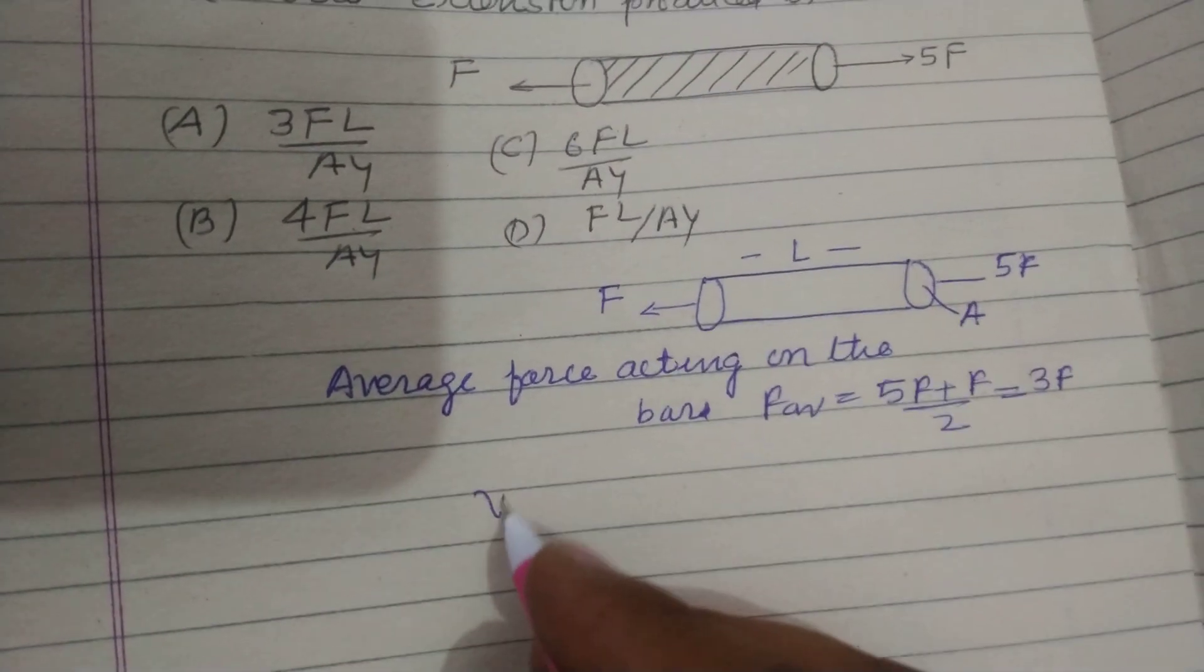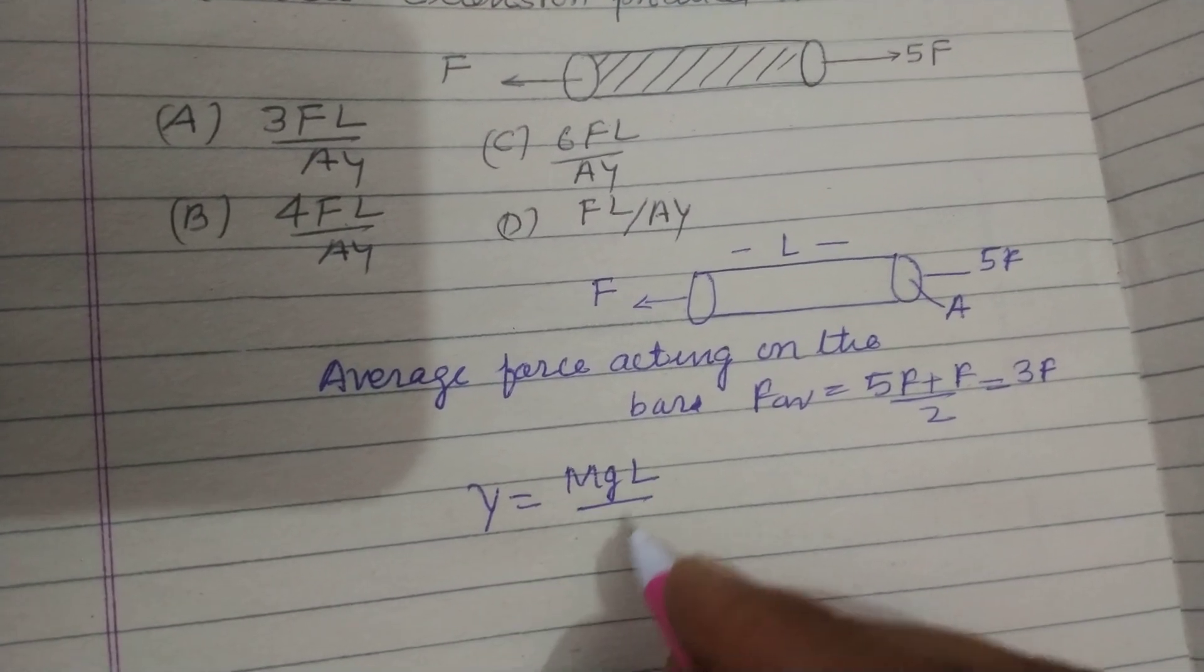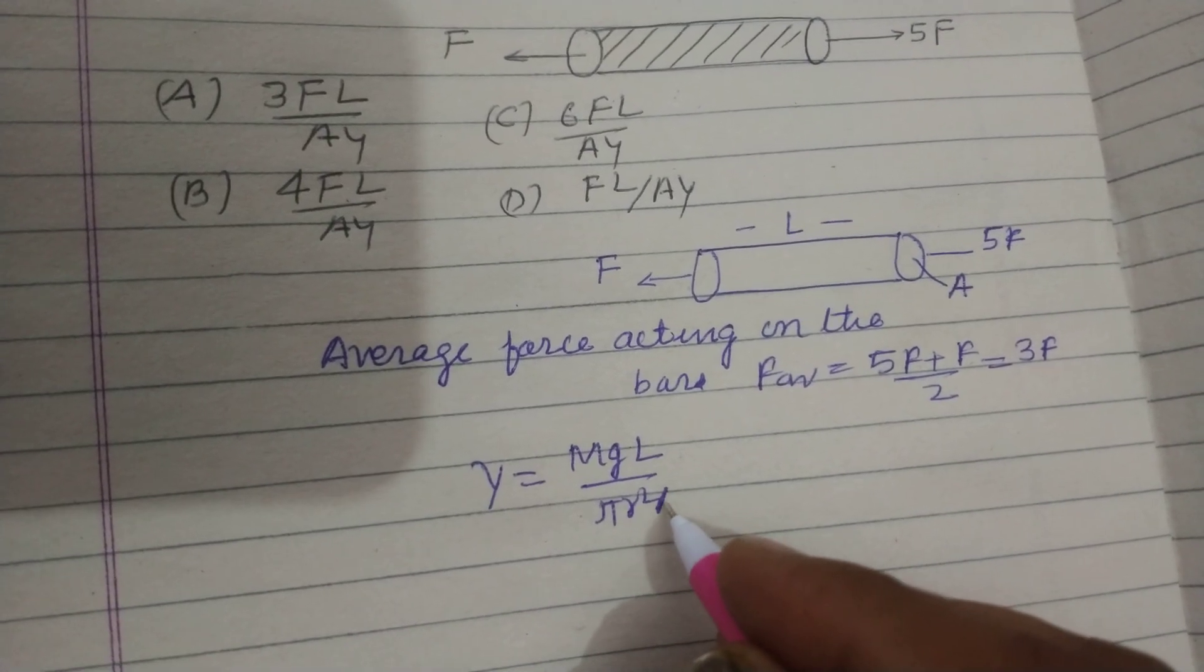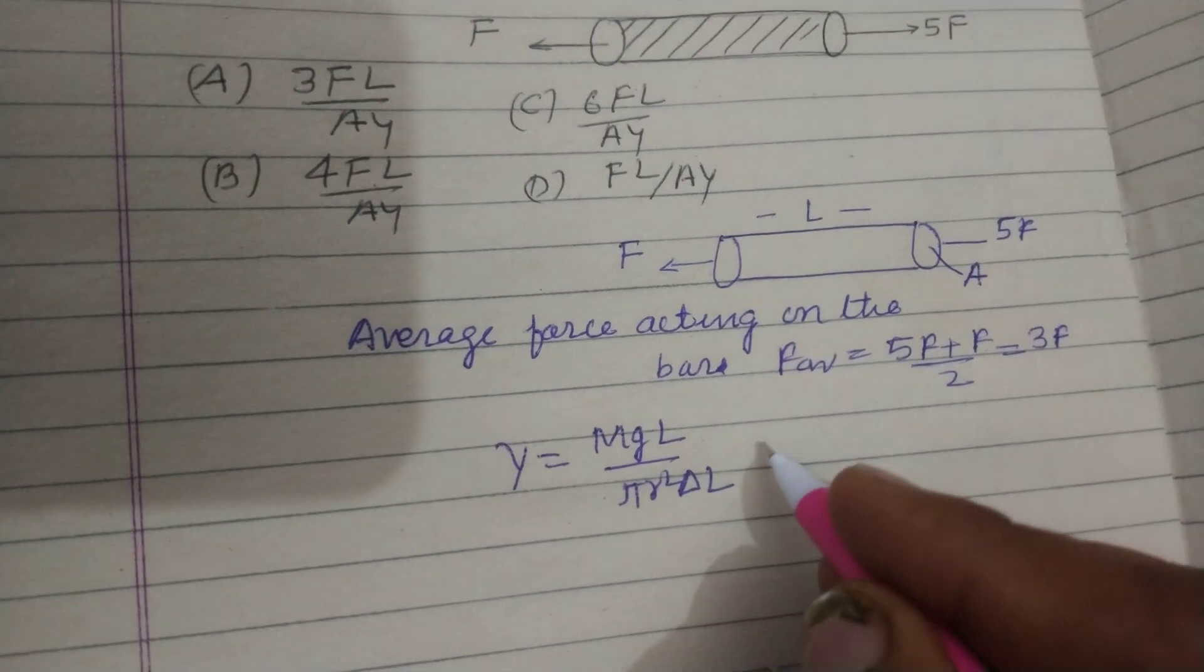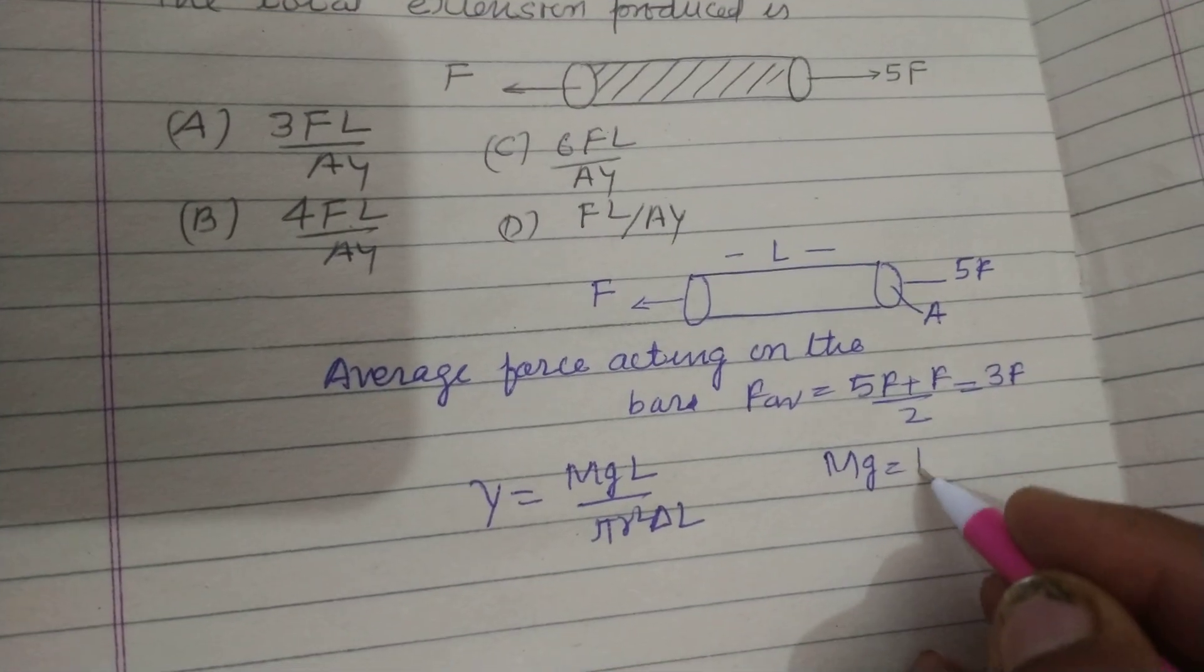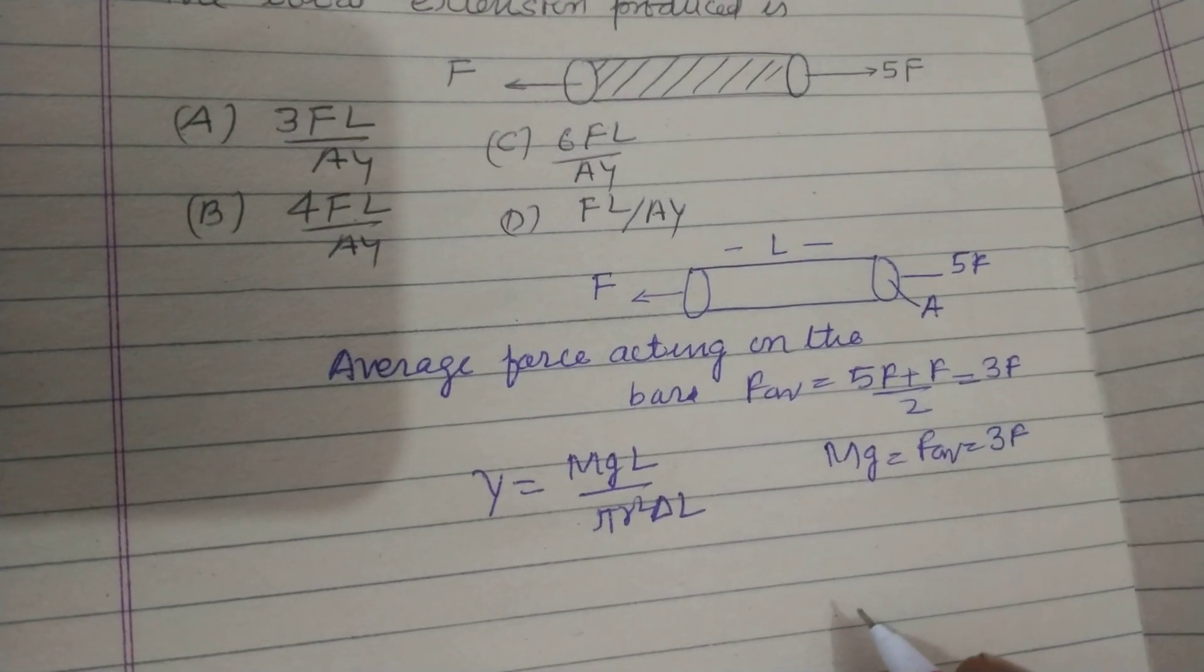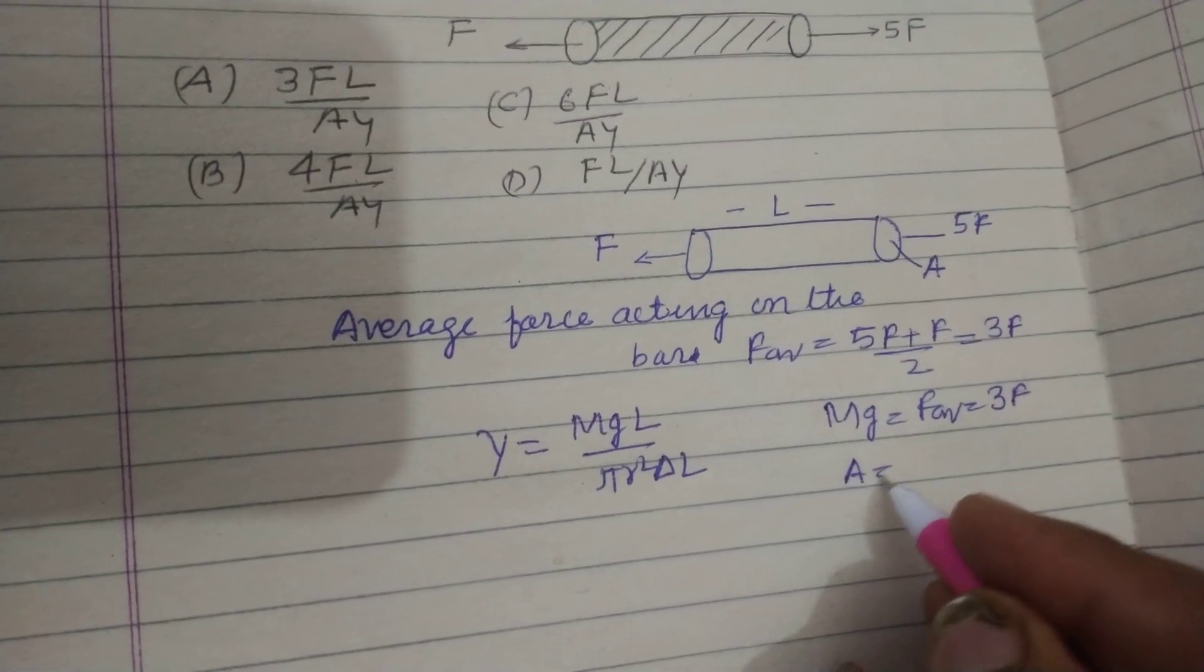And you know that Y equal to MgL over pi R square A into del L. So here Mg is the average force which is given as 3F, and A is the cross section area.